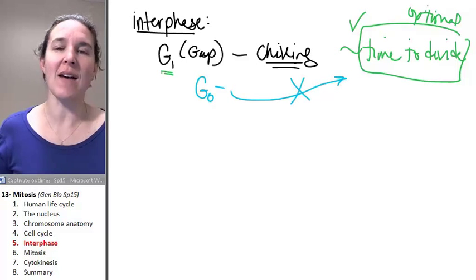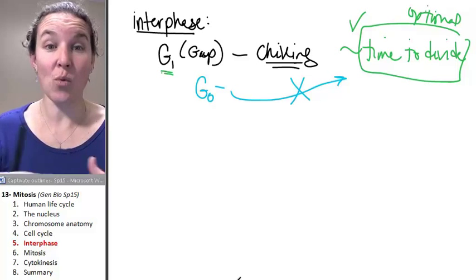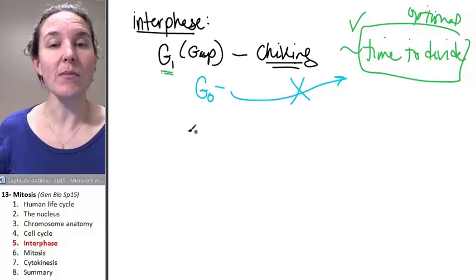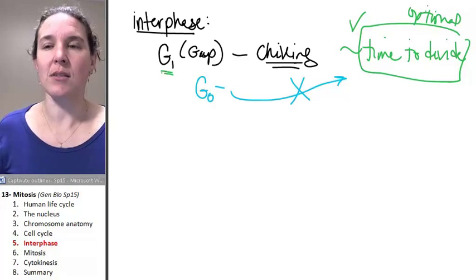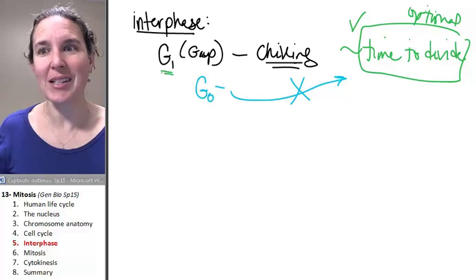That message never gets sent. The chilling cell will chill forever. Most cells do get the message that it's time to divide.